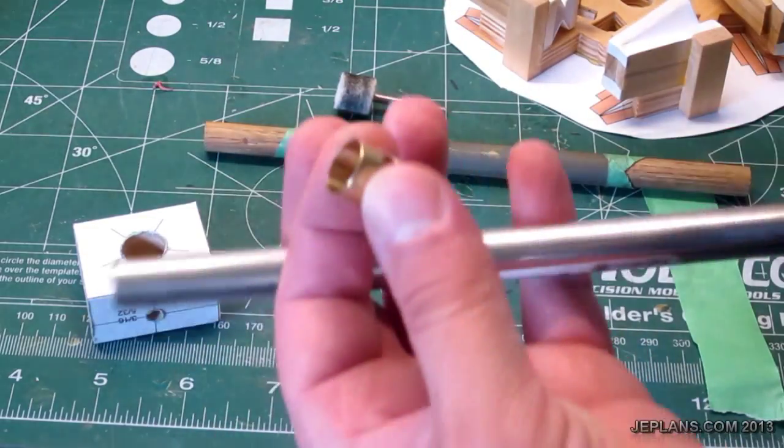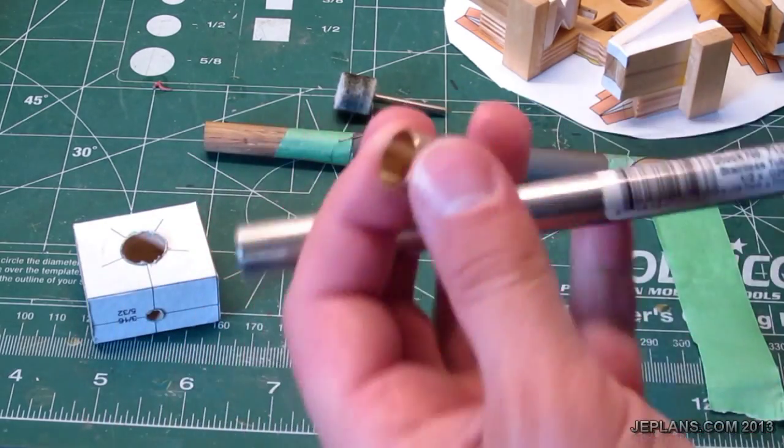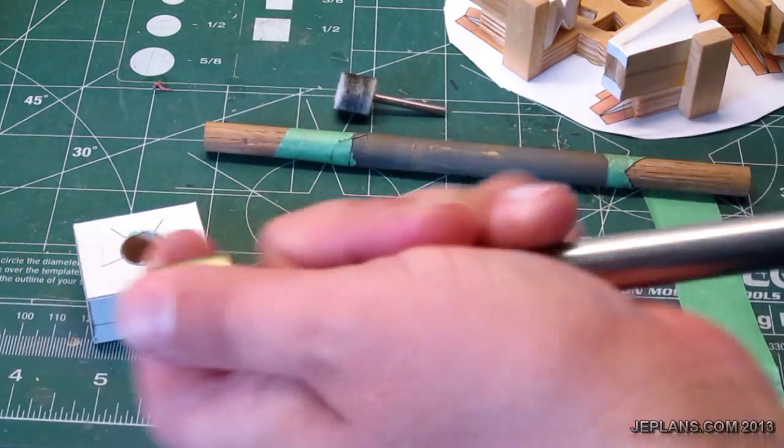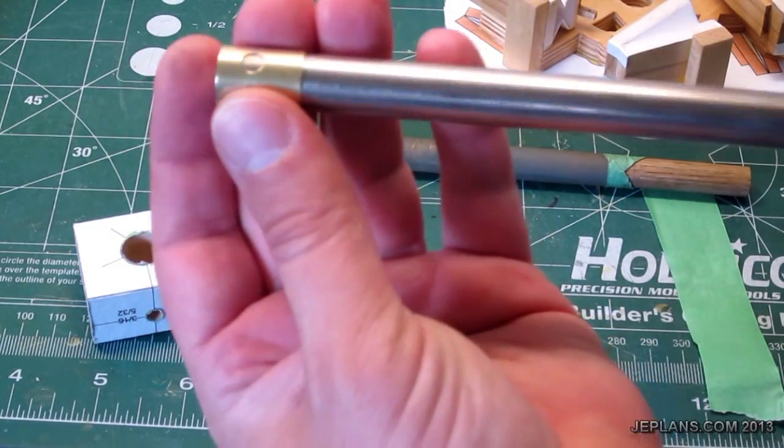Then I took, I actually had a half inch stainless steel tube, which I roughed up the ends slightly, put in my drill press, and then used it to deburr the inside.